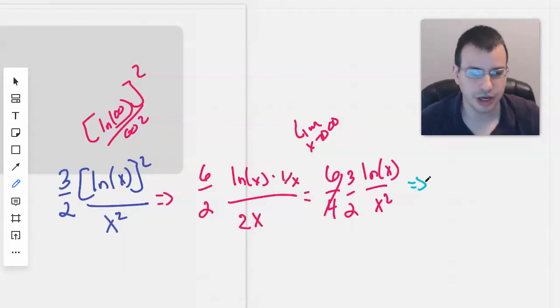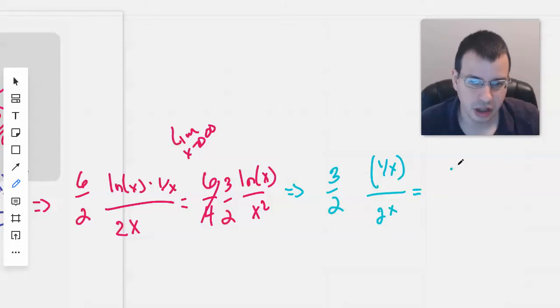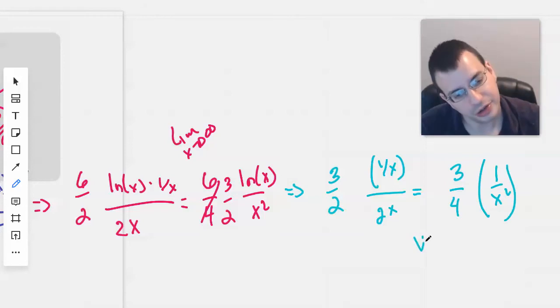So we're going to do L'Hopital's rule again. We'll have 3 halves times derivative of natural log of x is 1 over x, divided by 2x, which gives us 3 fourths times 1 over x squared. Taking the limit as x approaches infinity.